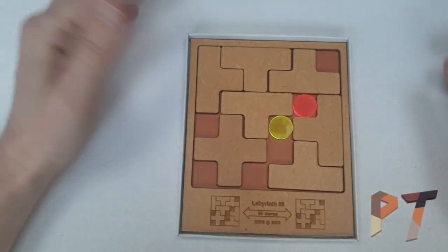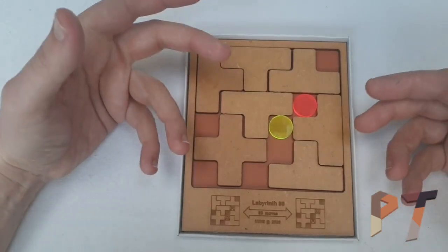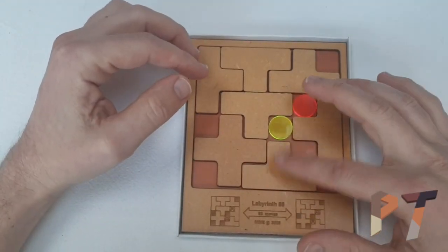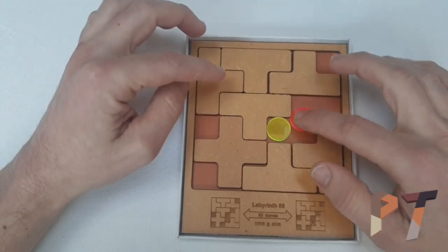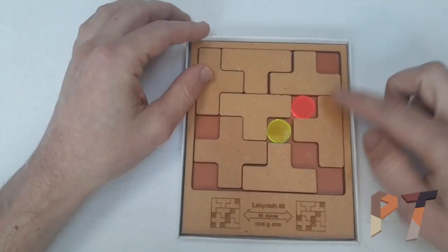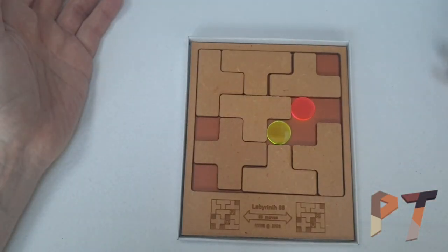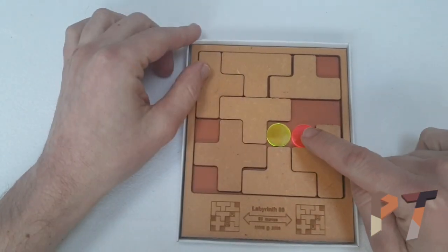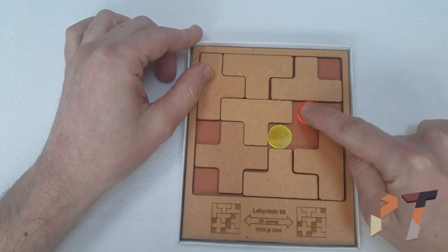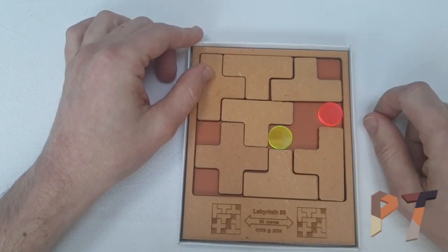Always remember with slide puzzles like this to count a move. So if for example I had this piece here and I move it down, that's one move. If I've got this red counter, even if I go up and across, that's counted as one move.